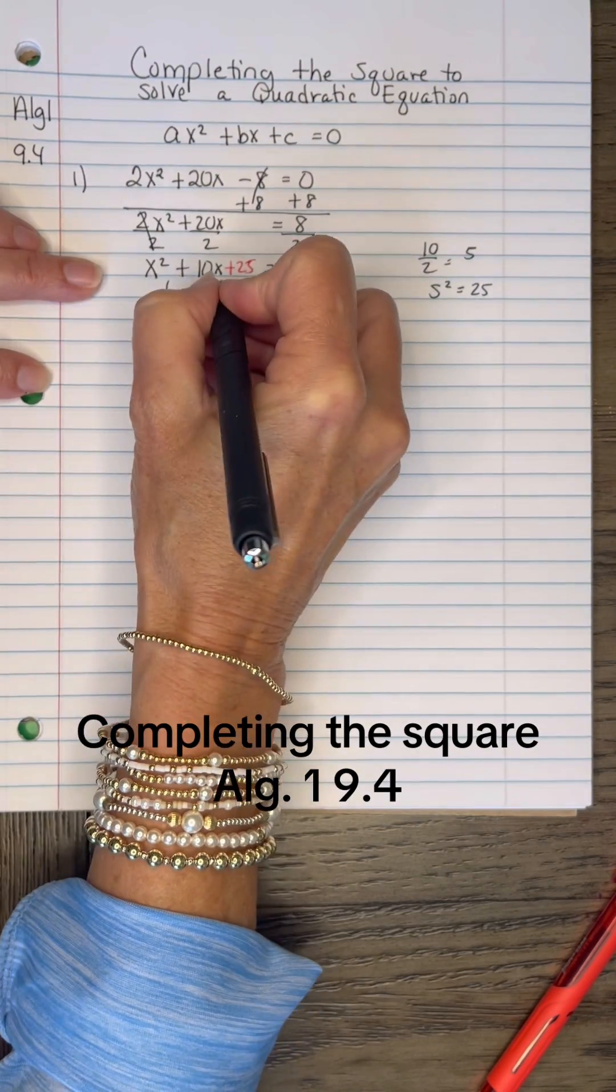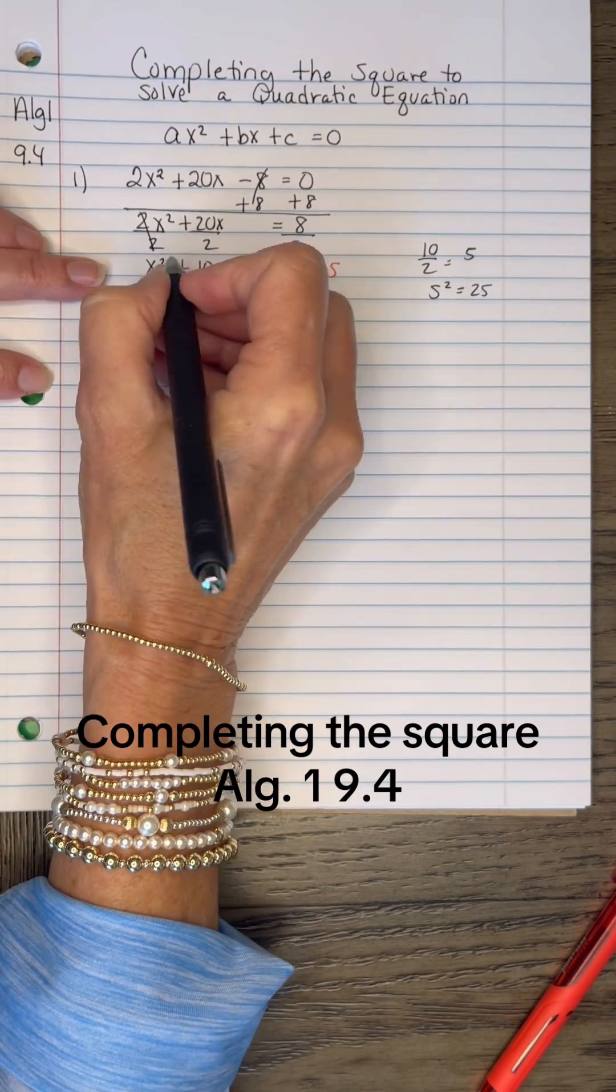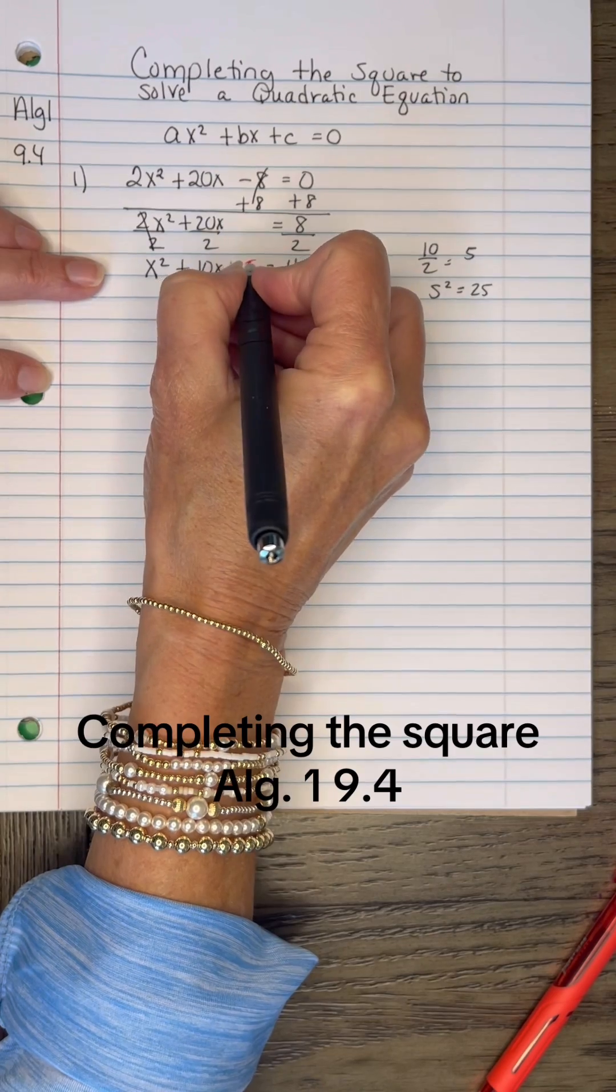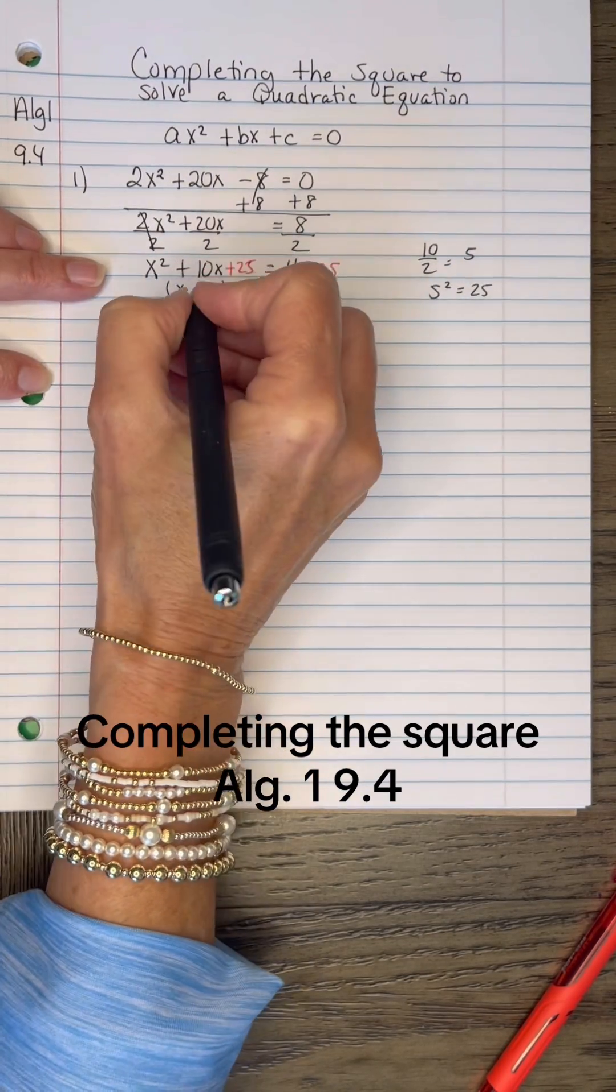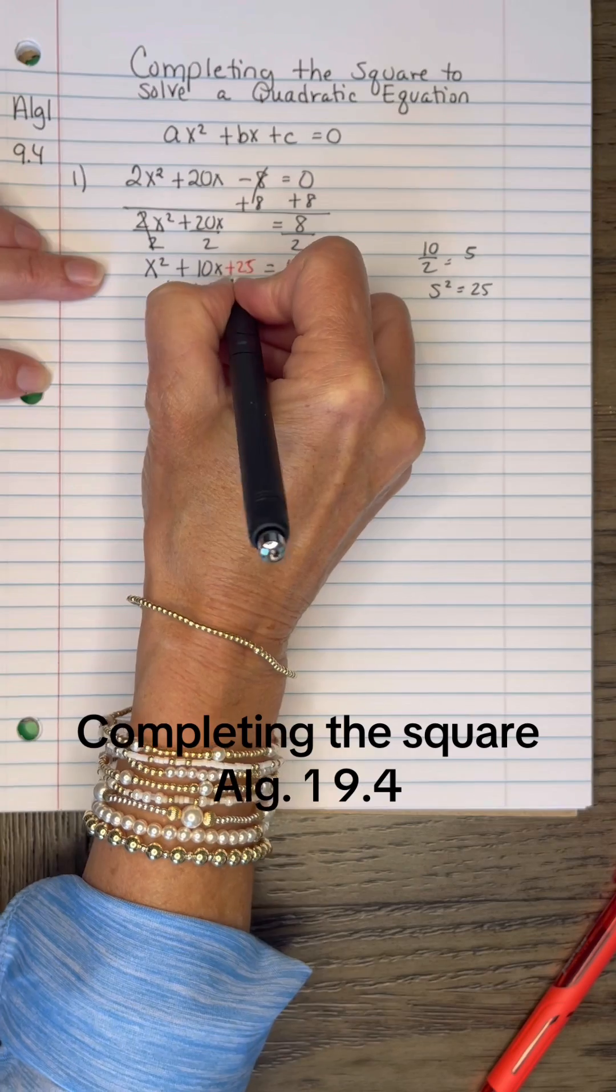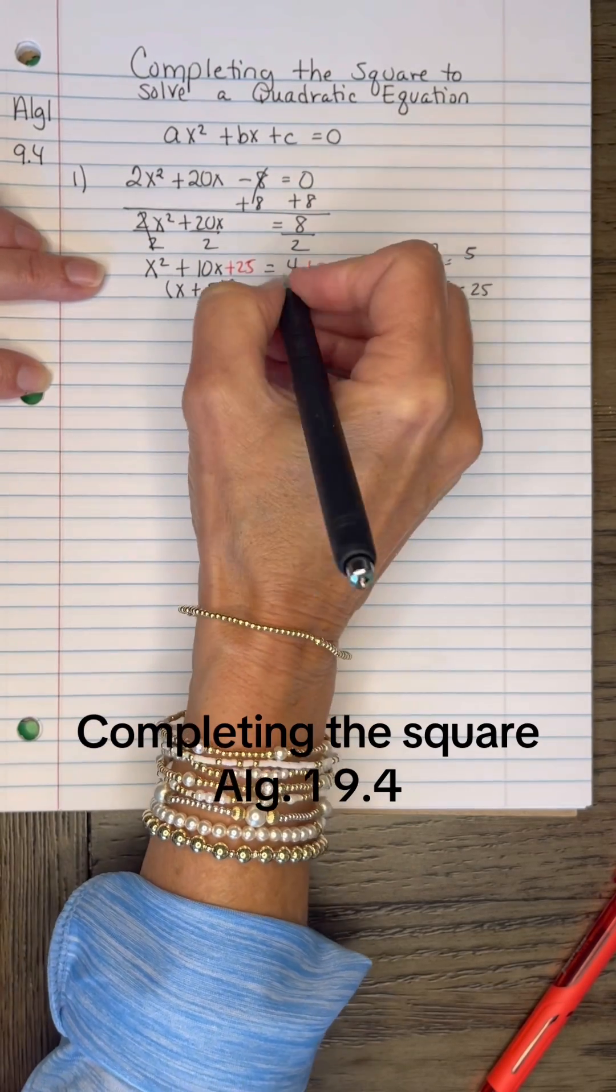Factoring the perfect square trinomial is very simple. You take the square root of X squared, it's X. You take the square root of 25, it's 5. You look right here, it's going to be a positive, and don't forget the square. And 4 plus 25 is 29.